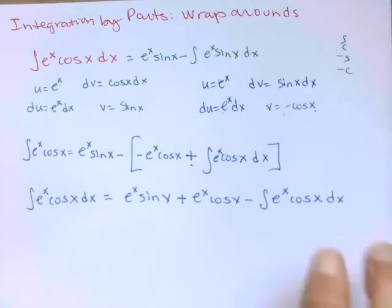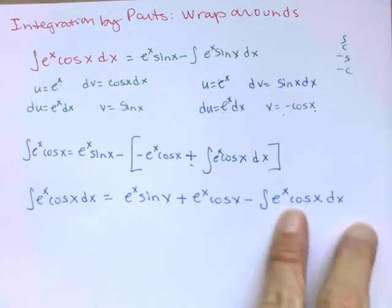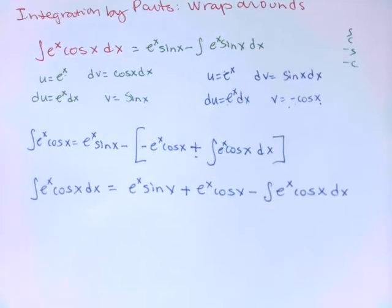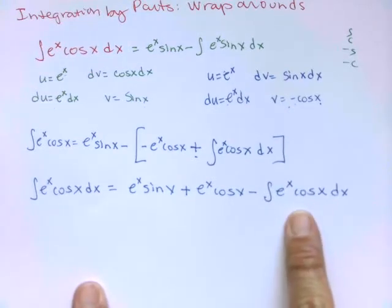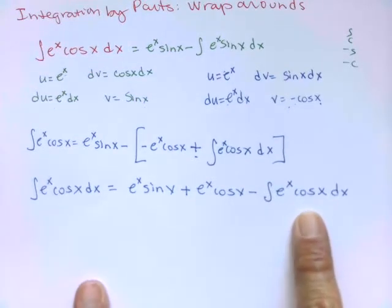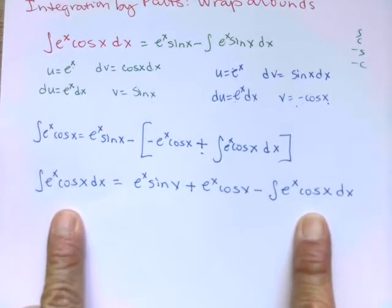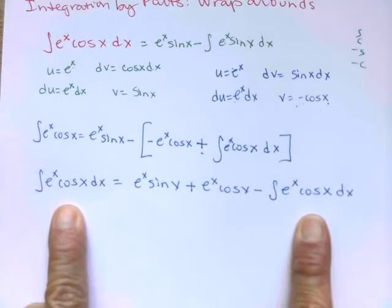Plus e to the x cosine x minus integral e to the x cosine x dx. You're thinking, hey, why aren't you doing by parts again on that last one? Well, we're just going to get in this cycle. But here's what I want you to notice: this integral on the very far right is exactly the same as the integral on the very far left.